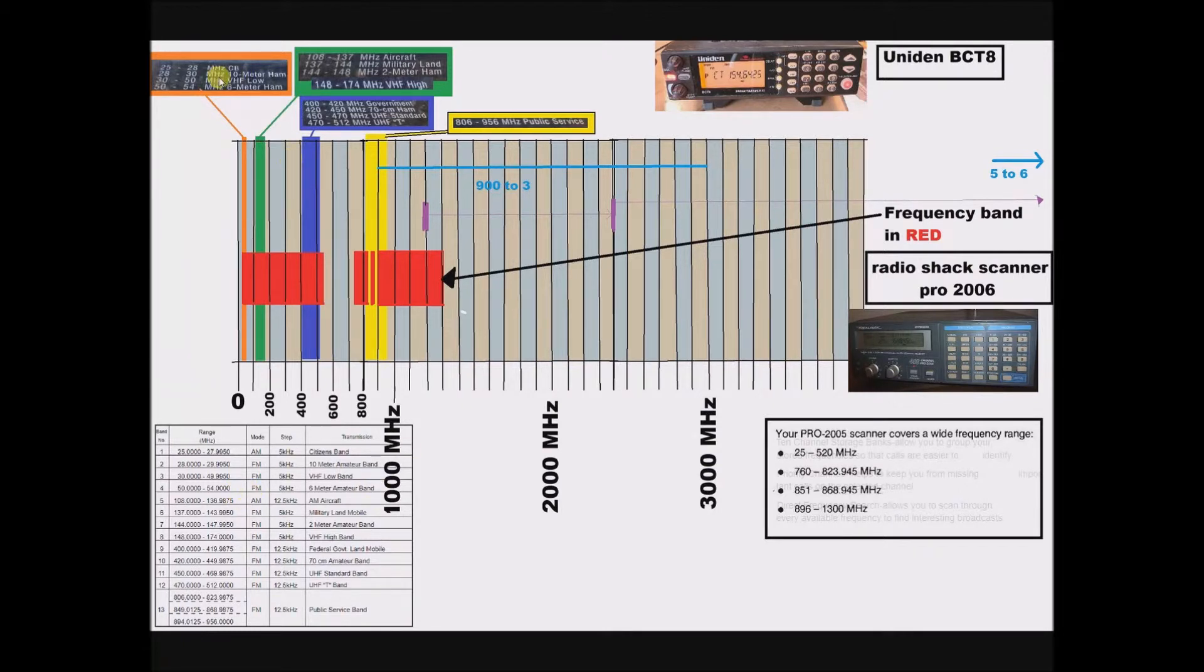And this is actually a picture from the top of the Uniden BCT8, which also has the frequency range. So like CB radio to 10 meter ham to VHF low to 6 meter ham all falls within this yellow range.